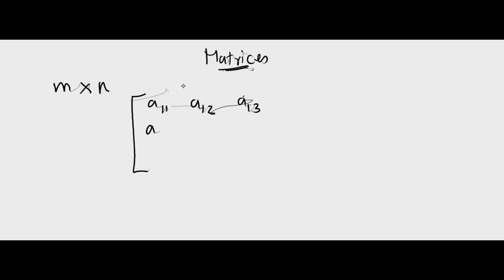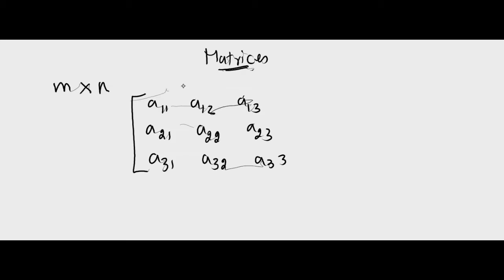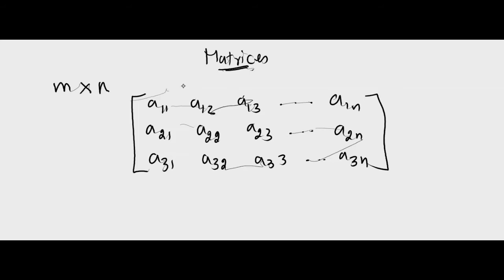A13, A21, A22, A23, A31, A32, A33, and so on till A1N and A2N and so on. Here M is the number of rows and N is the number of columns.